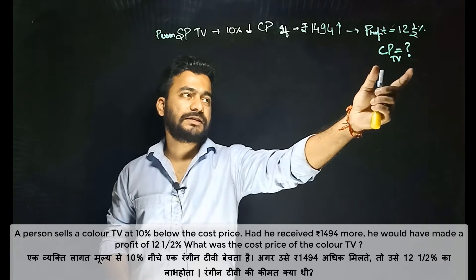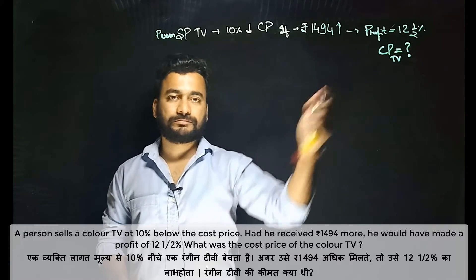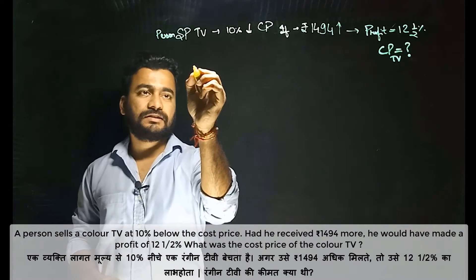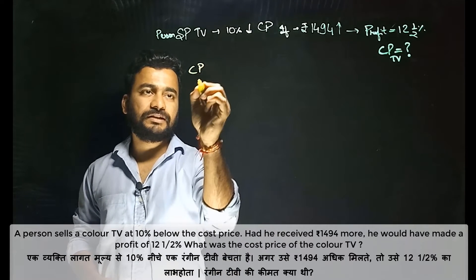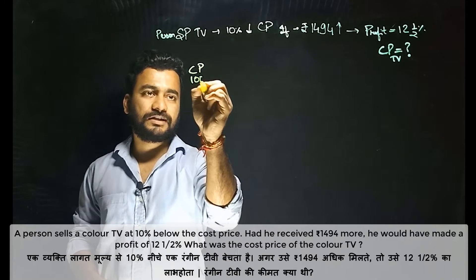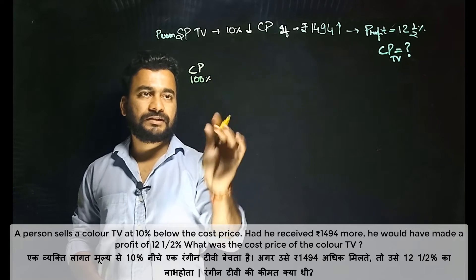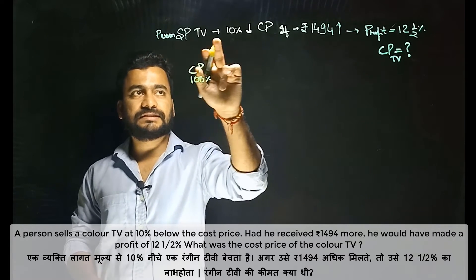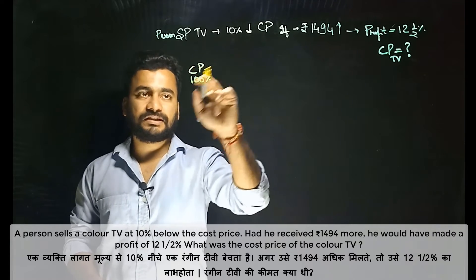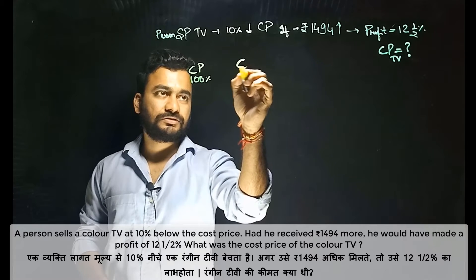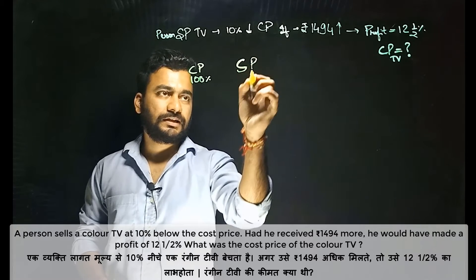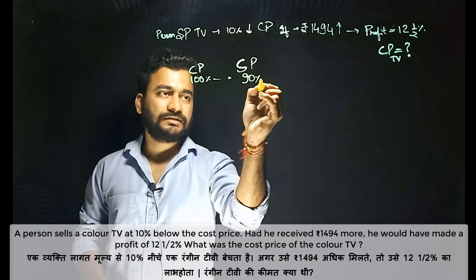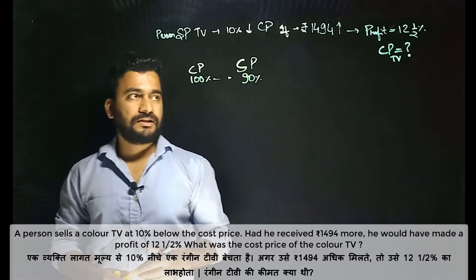So let us take the cost price of the TV as 100%. The person is selling it at 10% less than the cost price, which means the selling price is 90% of the cost price.